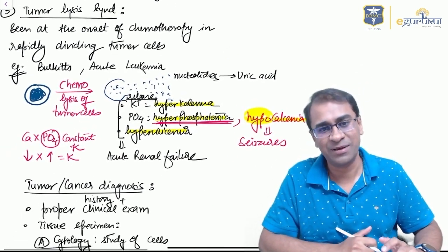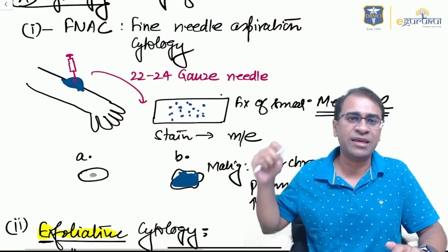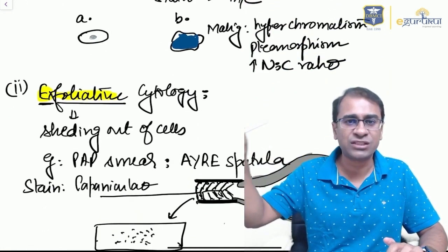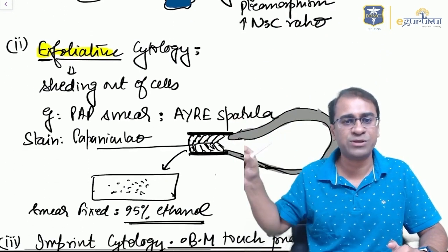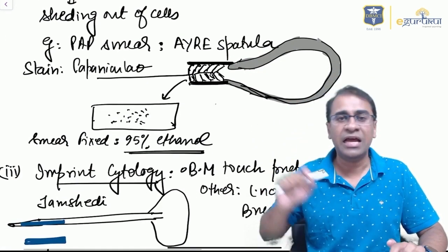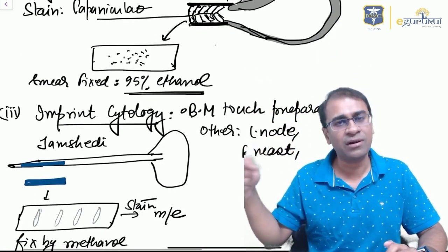For diagnosis, you can use a 22-24 gauge needle for FNAC. You can use a technique called exfoliative cytology, in which you can do a Pap smear with the help of Ayre spatula. This question also comes as an image-based question. The fixative for this is 95% ethanol.